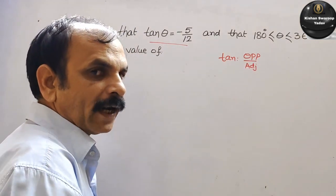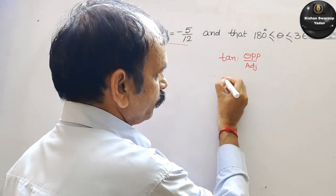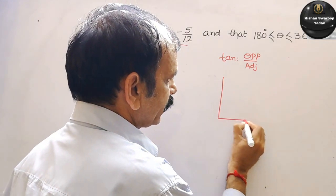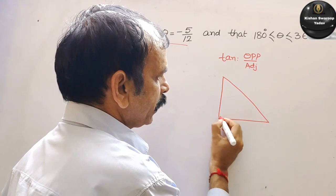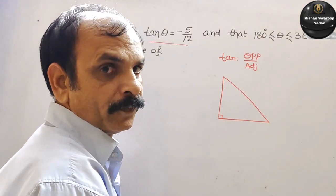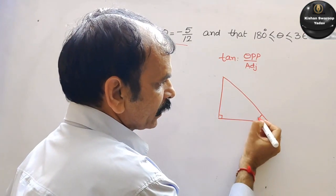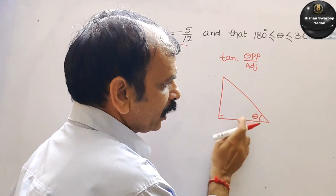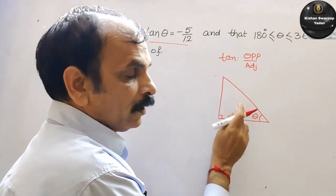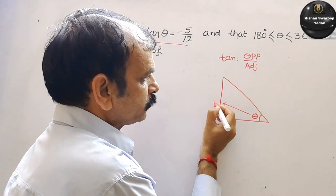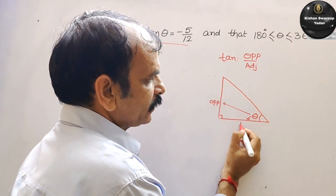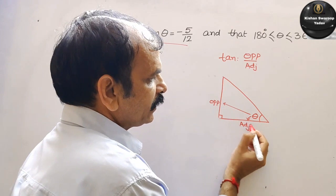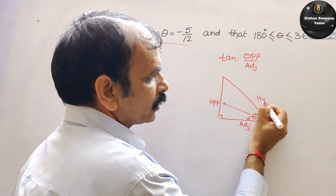Now if we draw a right angle triangle. Suppose this is our right angle triangle, here it is 90 degree and the theta is here. That means we are seeing from here. This is our opposite and this is our adjacent side and this comes your hypotenuse.